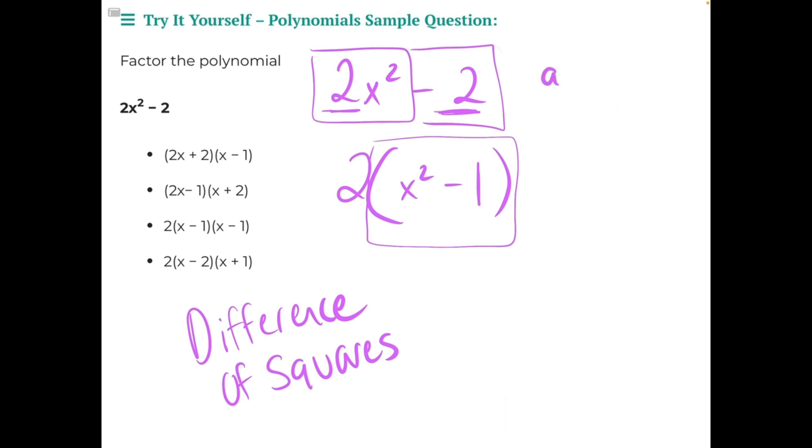The standard form of a difference of squares problem is a squared minus b squared. And the way this is factored out is a plus b times a minus b.